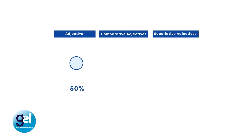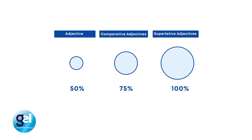The best way to demonstrate the difference between an adjective, a comparative adjective and a superlative adjective is to think about it in size. An adjective is about 50% — think of a little circle. A comparative adjective is about 75%. And then the superlative adjective is 100%. This can help learners understand how we grade and how we use these adjectives.